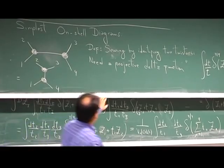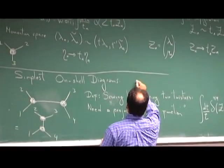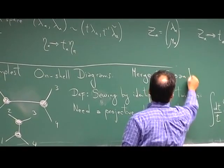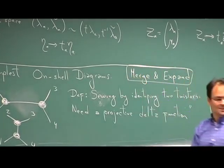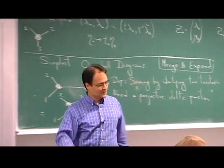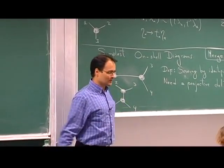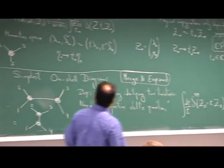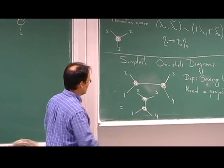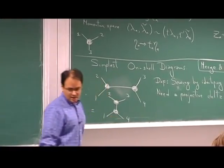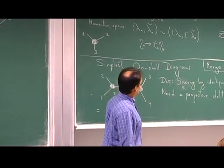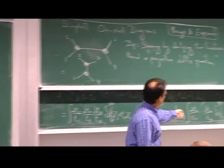That's what I'm going to call the merge-and-expand operation. I'm only going to consider planar objects, so there is only S and T channel, no U channel. Merge and expand — first rule: whenever you see something like that, you can merge, expand, and get the same answer. Next, we can immediately construct an infinite number of these objects, because this four-particle object looks much like the original three-particle one — so we can attach another one.